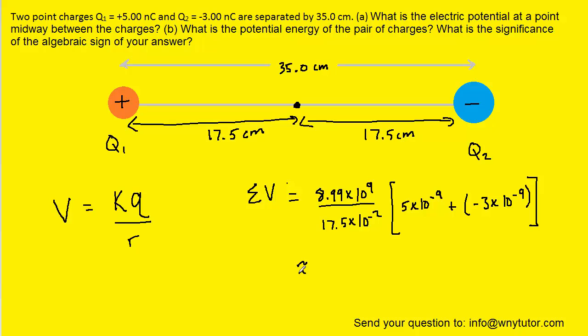And when we crunch that down on our calculators, we should get approximately 103 volts. So this would be the correct answer for the total potential at this point right here.